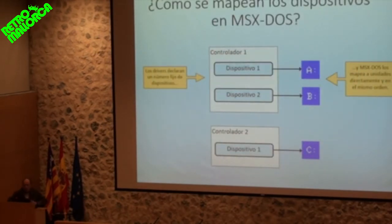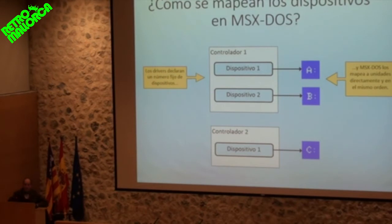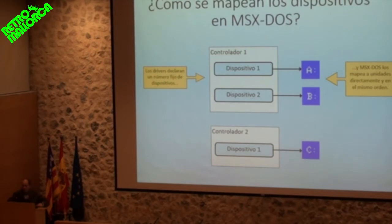Let me describe how devices were mapped in MSX-DOS. This OS worked with disk units — A, B, etc., just like MS-DOS — so the mapping was direct and simple. There were a series of controllers, each being a ROM with a disk unit. Each controller declared a number of devices at startup. At boot, the OS kernel would query all controllers, and each device was mapped to a drive in the same order declared. So if one controller had two devices and another had one, you'd have drives A, B, and C.